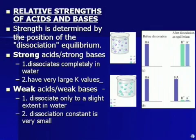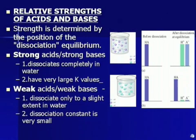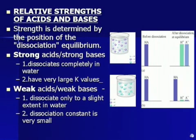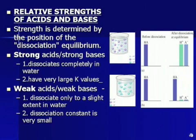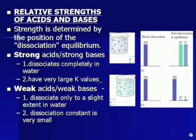A strong acid or strong base — if you start with a bunch of strong acid, after you get to equilibrium, pretty much 100% will be ionized or dissociated. So they dissociate completely in water. You can assume the molarity of HA will be the same as the molarity of H+ and A−. They have very large K values — it's very large to the right. Large K values favor the products.